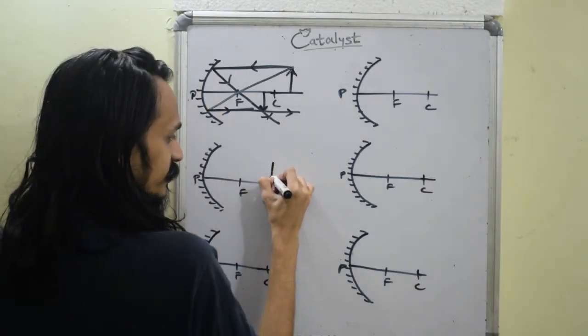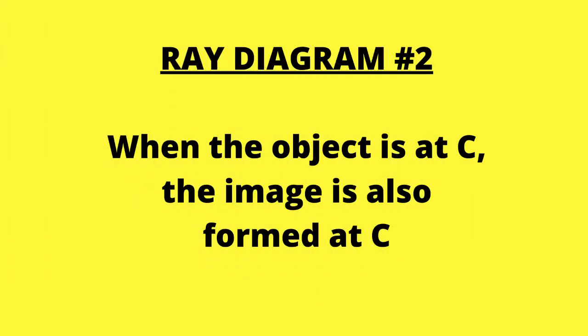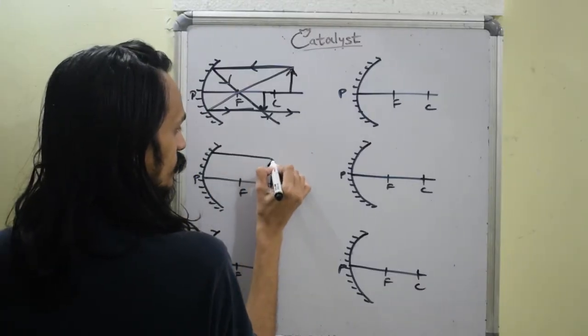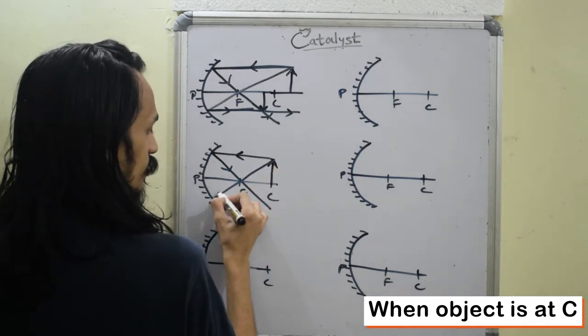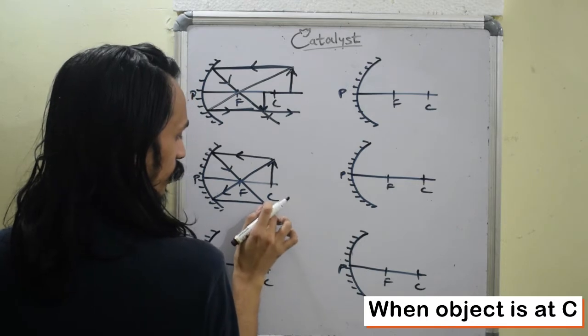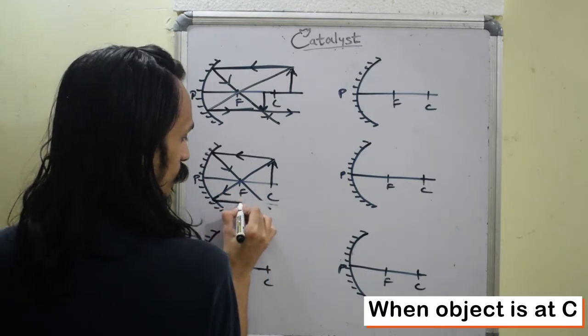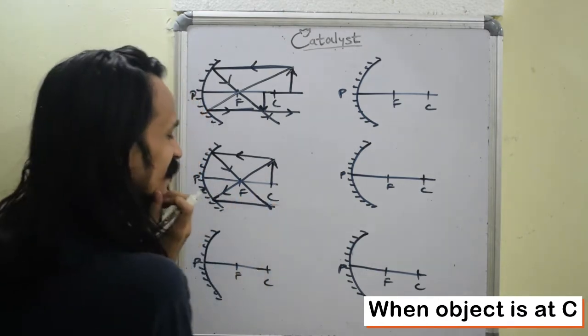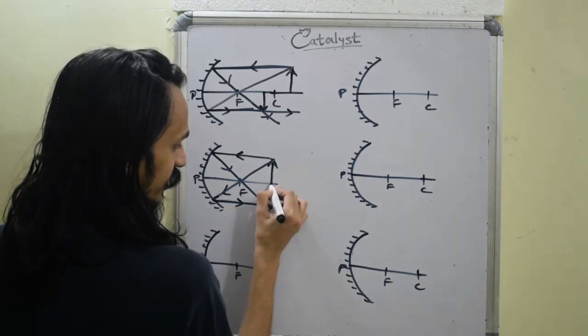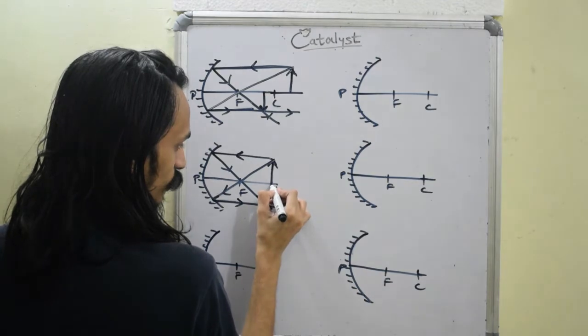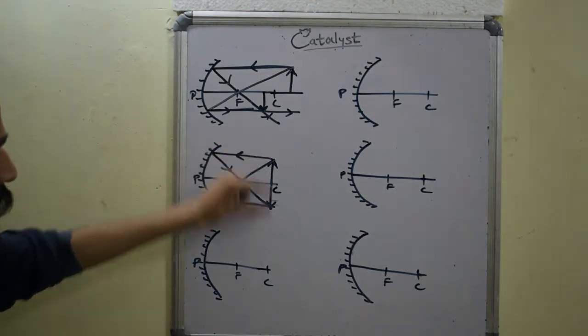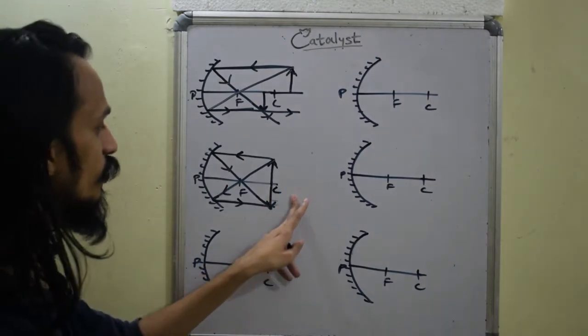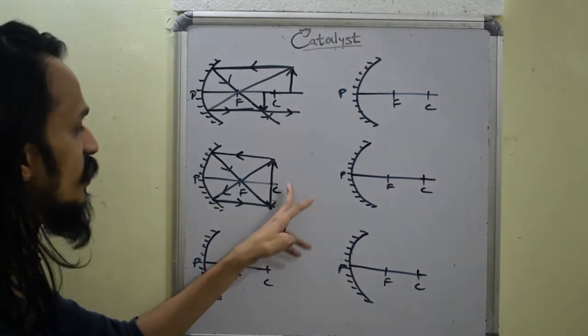For the next case, I will put my object exactly at C. And again follow the same two rules. One is parallel to the axis through focus, ray number one, and the second one is through focus and then goes back and becomes parallel to the axis. So you will see that these rays meet exactly at the same point as C. This was C. So you will see that the image is also formed at C and it's the same height. You will see that both the object and image have the same size. So if you recall the table, it will say object at C, image at C, and the size is the same.